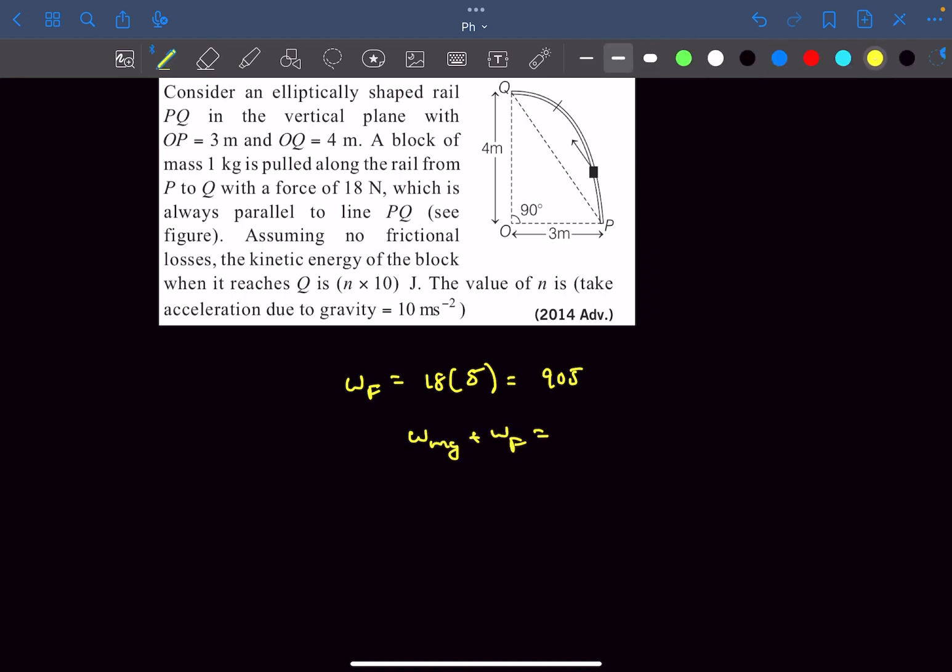The normal force won't do any work, so now we can use the work energy theorem that states that the work done by mg plus the work done by force F equals a change in kinetic energy, which is basically the kinetic energy at point Q, and that is what they have asked in the problem. Now work done by mg, the mg is acting vertically downwards and the displacement is in the upward direction, so the work done by mg is going to be negative.